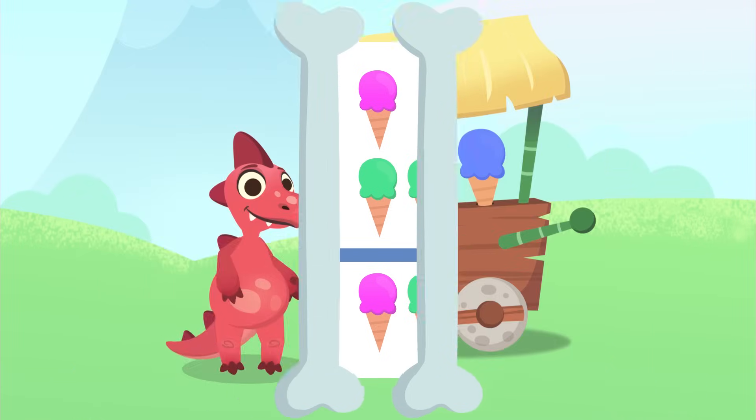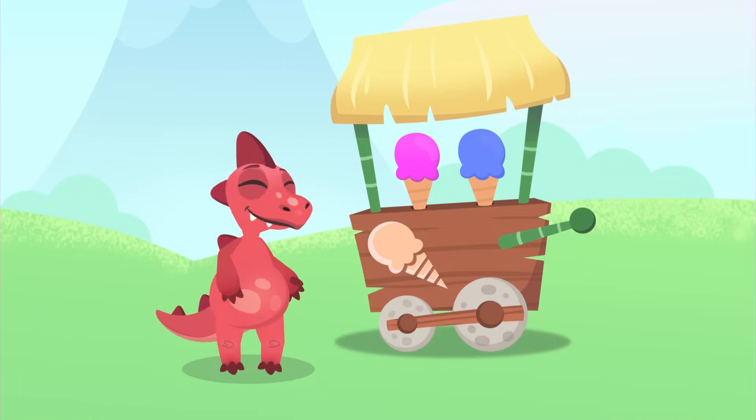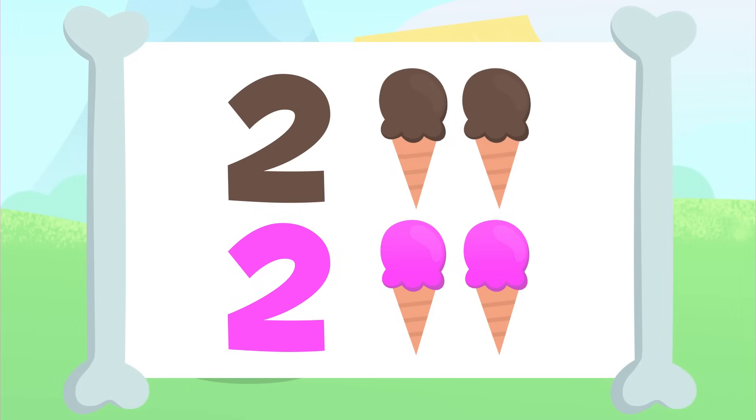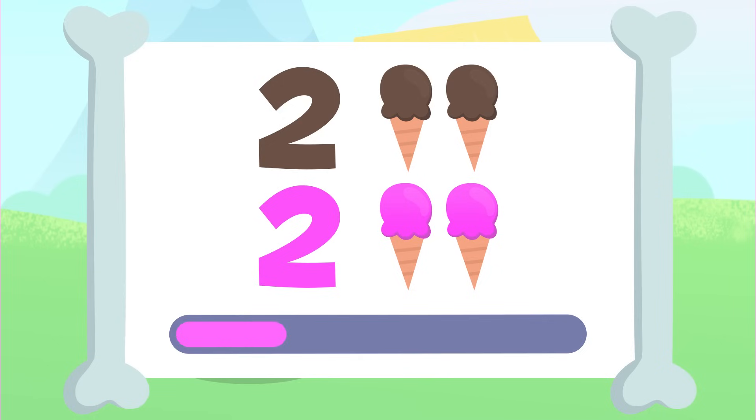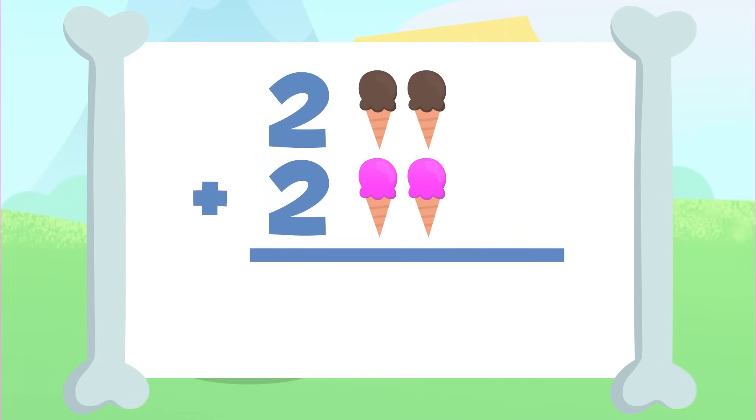Shall we carry on? Now you'll have to add these two ice creams up here to those two ice creams down there. I'll give you a few seconds to add them up. How did that go? You got it! The result of adding up two plus two is one, two, three, and four. Four! There are four ice creams. Two plus two equals four.